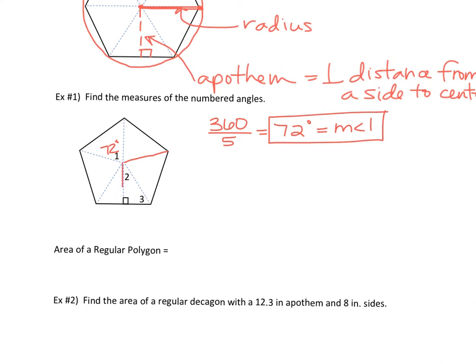Now once the apothem gets drawn in, what does it do to that 72? It cuts it in half. So if I draw an apothem in, it's going to cut that 72 into two equal parts. So we would say angle two is 72 divided by two, or 36 degrees. So now if this is 36, how can we find angle three?